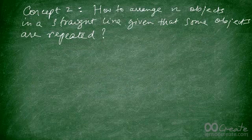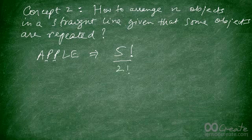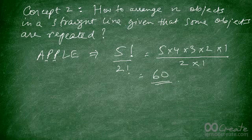Now, how do you arrange n objects in a straight line when some objects are repeated? For example, the letters in the word 'apple.' Apple has five letters, so you might think it's five factorial — and you're not wrong about the count. But there are two P's, which are duplicates. To discount this repetition, divide five factorial by two factorial: five times four times three times two times one, divided by two times one, giving you 60, not 120.